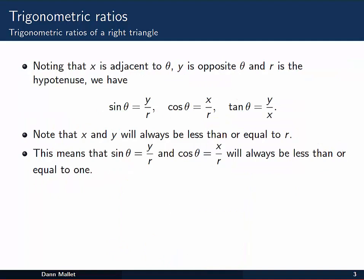So we have, in general, these equations for the trigonometric ratios for a right triangle. Sine of theta is the opposite side y divided by the hypotenuse r, and so on for cosine and tan of theta.